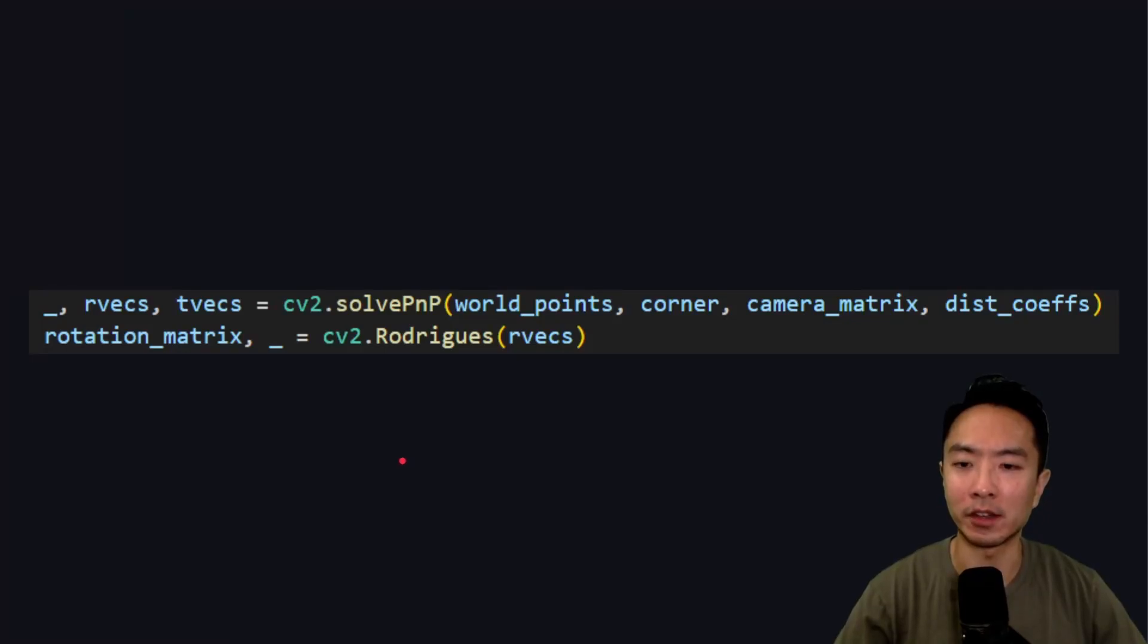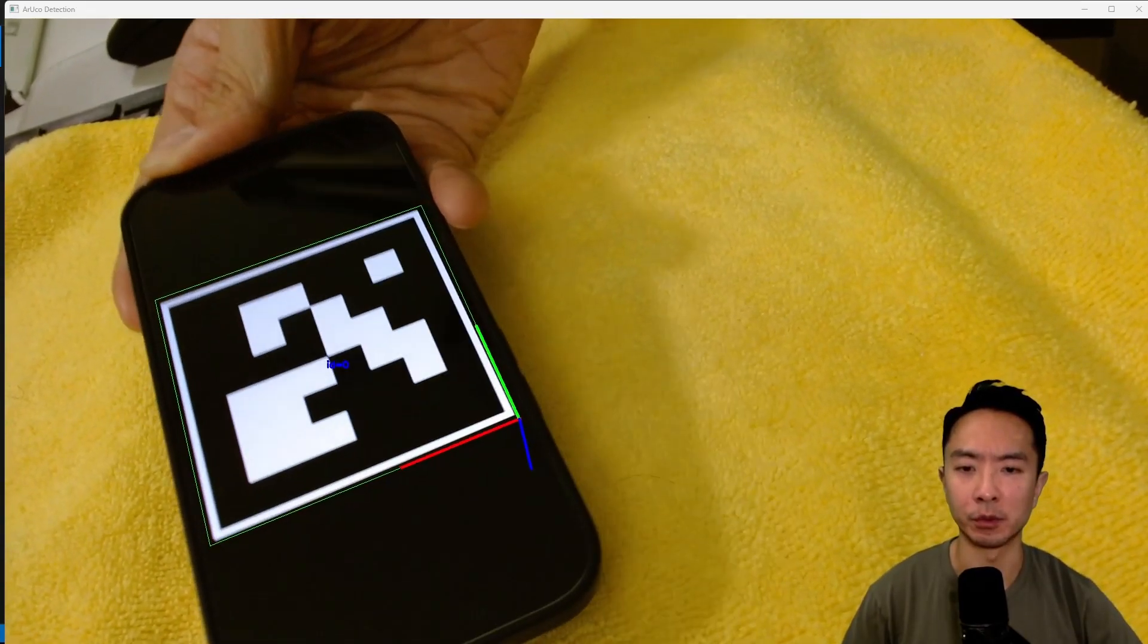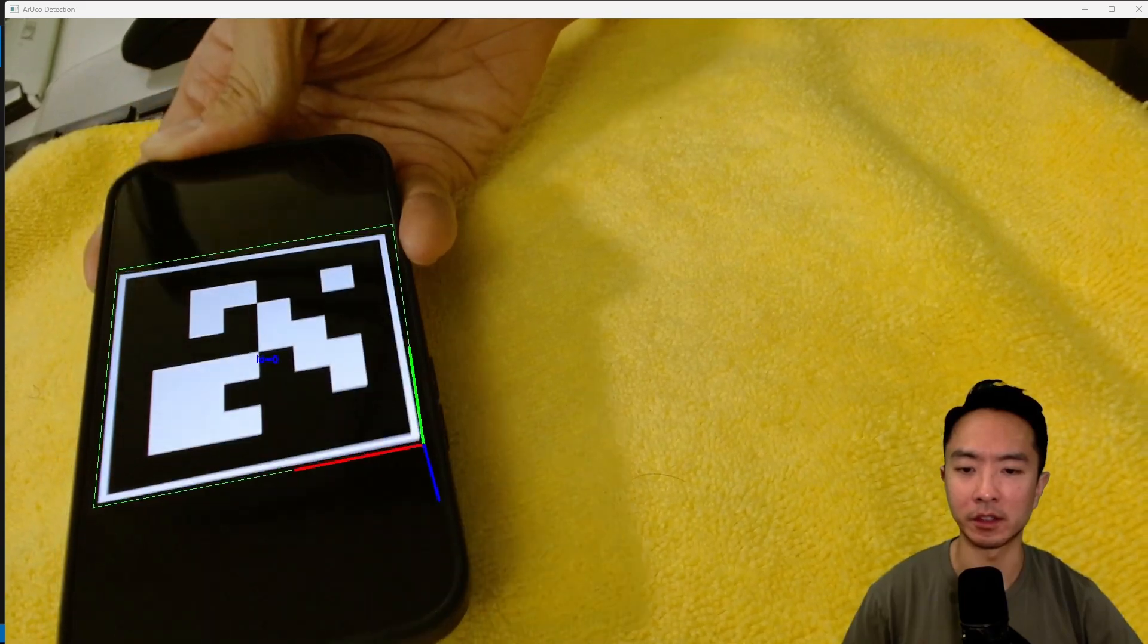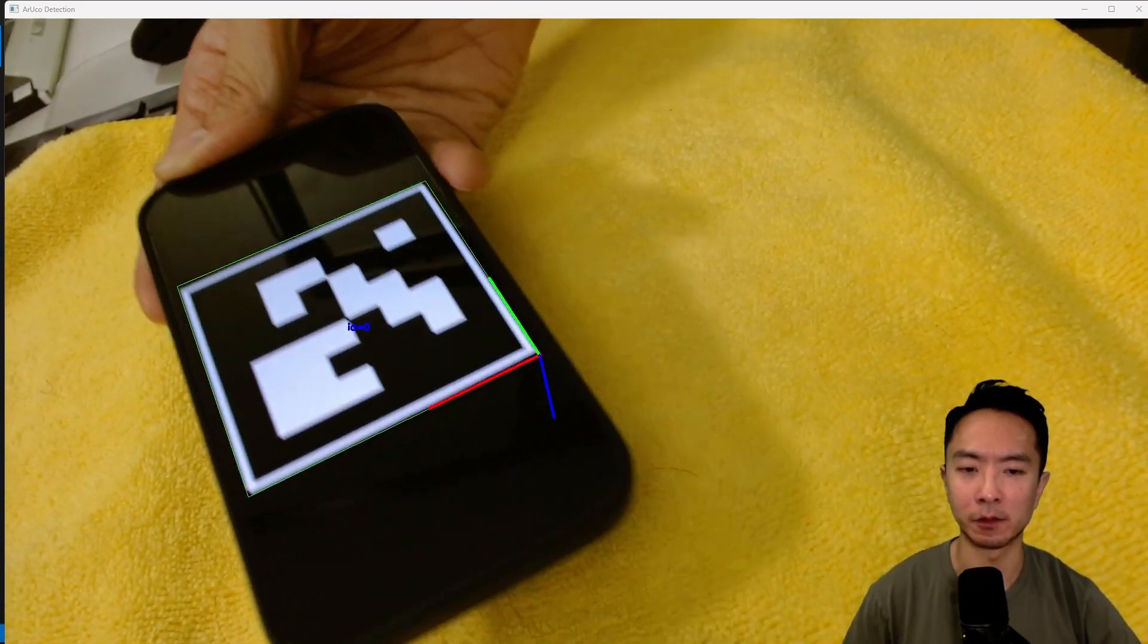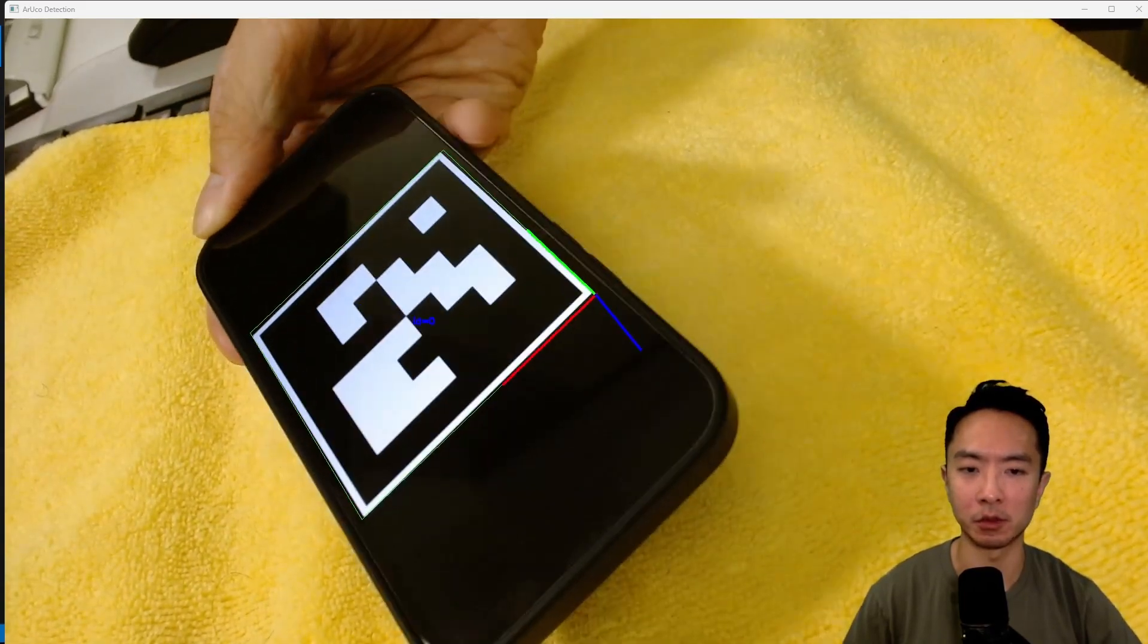All of this is calculated using the solvePnP function, which then returns us our rvec and tvec. One thing about rvec is that you need to use the Rodrigues formulation to get the rotation matrix, which we'll use later on. Here you can see this is our ArUco marker pose estimation, and you can see that it finds the frame location and it's doing pretty well.